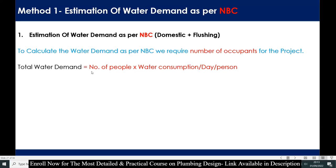The number of people can be obtained either from the furniture layout — that is the first priority — or second, as per the ASHRAE 62.1 standard. The water consumption per day per person you will get from the NBC standard.